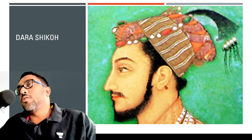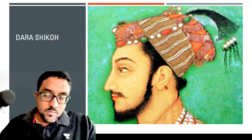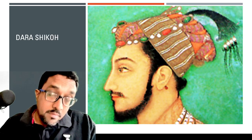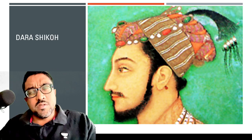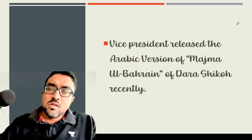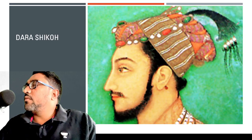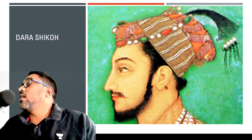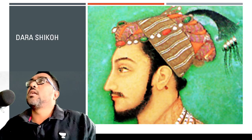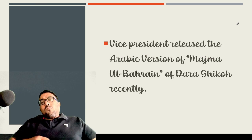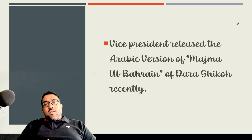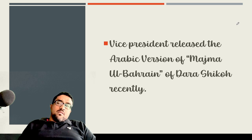Archaeological Survey of India and BJP — political discussions have happened about Dara Shikoh. Dara Shikoh is the eldest son of Shah Jahan and brother of Aurangzeb. Why this was in the news is mainly because the Vice President recently released the Arabic version of Majma ul Bahrain by Dara Shikoh. Dara Shikoh is a writer, and one of his most famous books is Majma ul Bahrain.